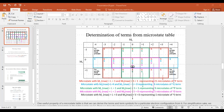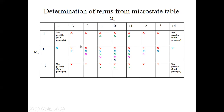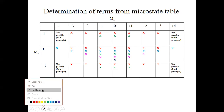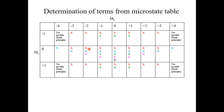In the last class we started to look at terms, and we saw that terms are a necessity in order to correctly describe the optical properties of coordination compounds, so the ligand field theory alone is still not enough for that. The last point we discussed was how we can derive the terms of a particular electron configuration using a microstate table, and we used the example of a d2 electron configuration of a free ion to show this.